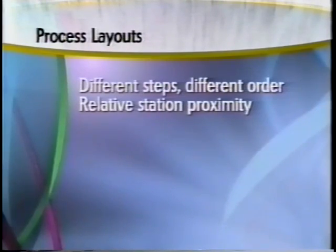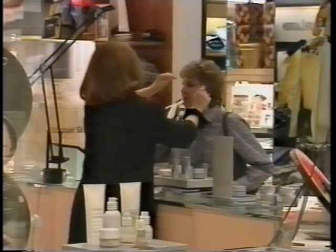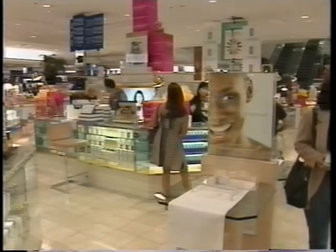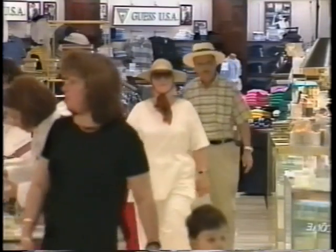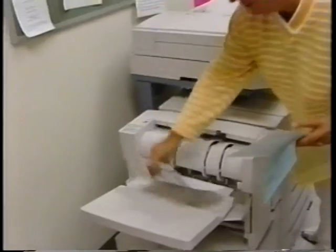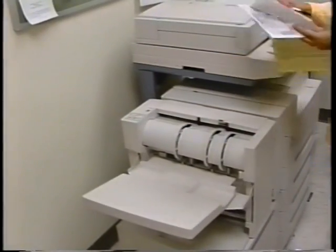Depending on facility objectives, the layout may be planned differently. For example, in a retail setting, it's desirable to have high margin items such as cosmetics near the entrance to the store. In other settings, placing high volume items near the back of the store maximizes customer travel to reach the items needed. In an office setting, there may be a central copy center to minimize travel for all office users.